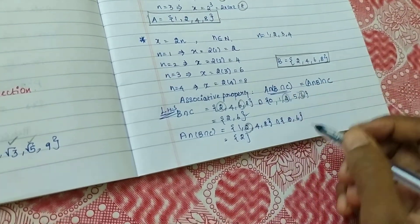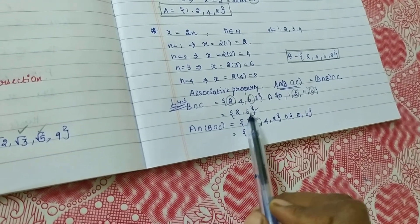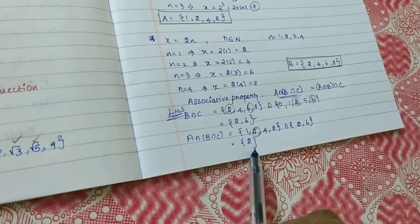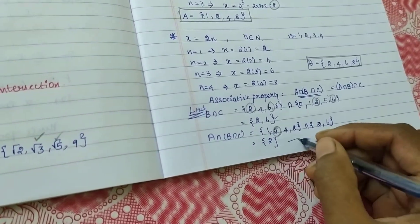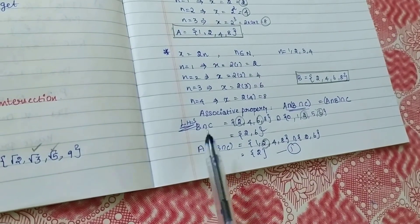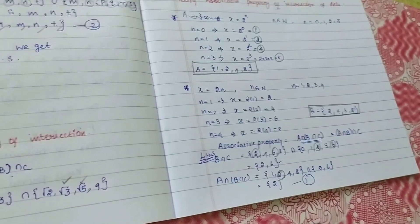This is LHS. This is LHS. B intersection C. First I did 2, 6. A intersection B intersection C, what I am getting: 2. This is my LHS first equation. You are going to find out the second equation, whether it is equal or not. You should verify and write answer or not.